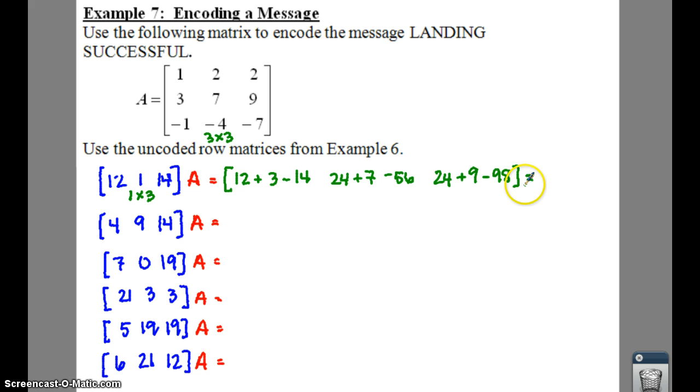So this will end up giving us a 1. When you add these together, 12 plus 3 is 15, minus 14 is 1. 24 plus 7 is 31, minus 56 gives you a negative 25. And then if you add the last group together, you get a negative 65.